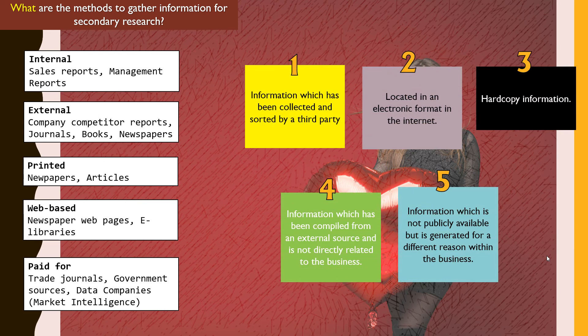On the right-hand side you'll see five categories, which are the headers for the information on the left-hand side of the presentation. I'm going to give you some time to label items one through five according to the categories on the left, and then we'll check our answers.